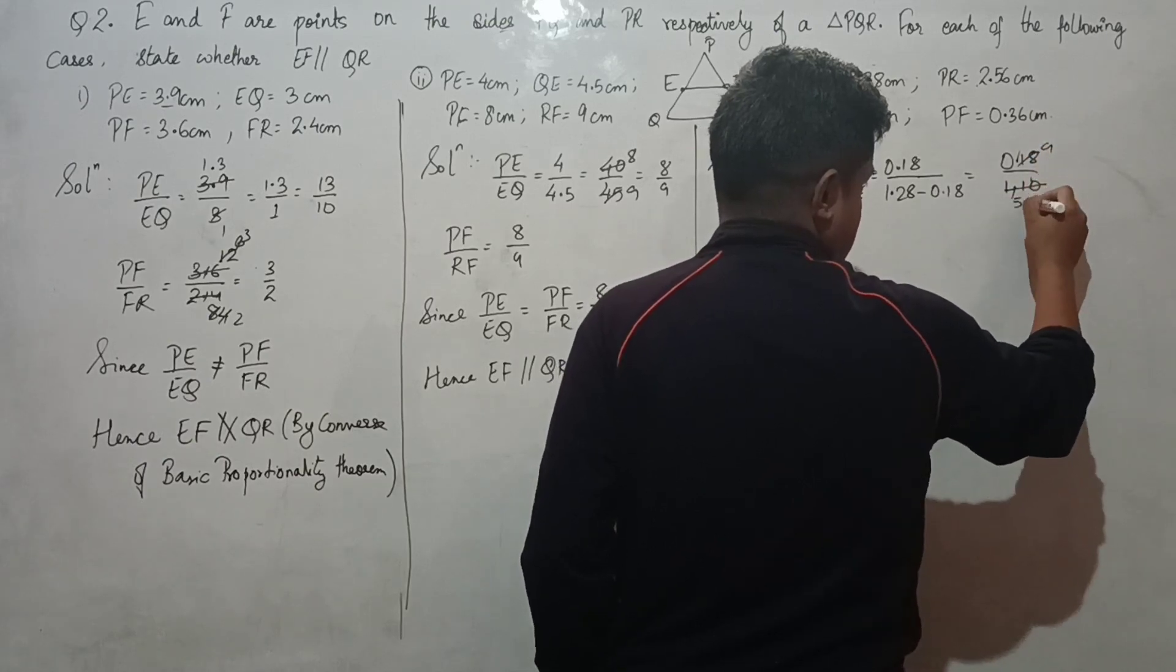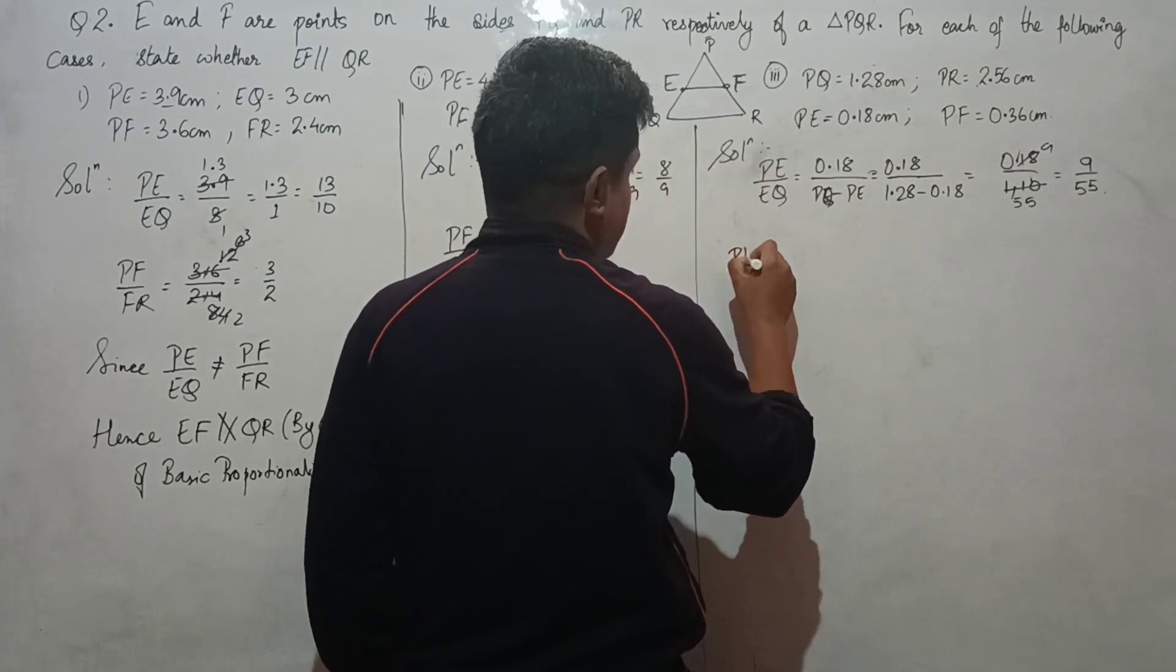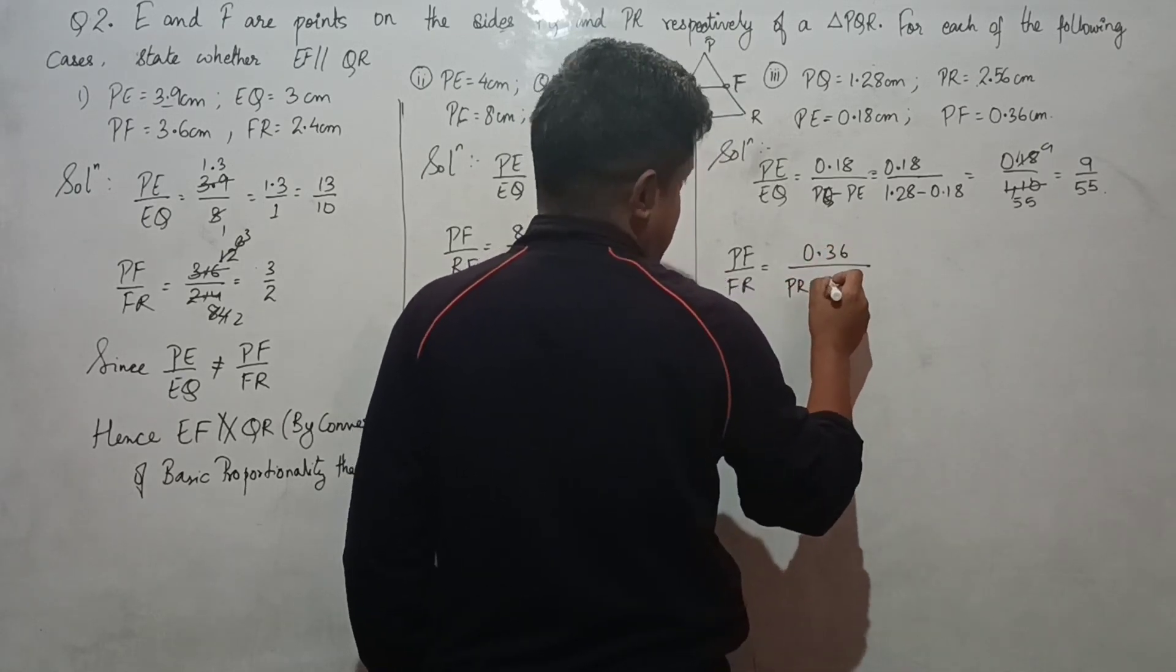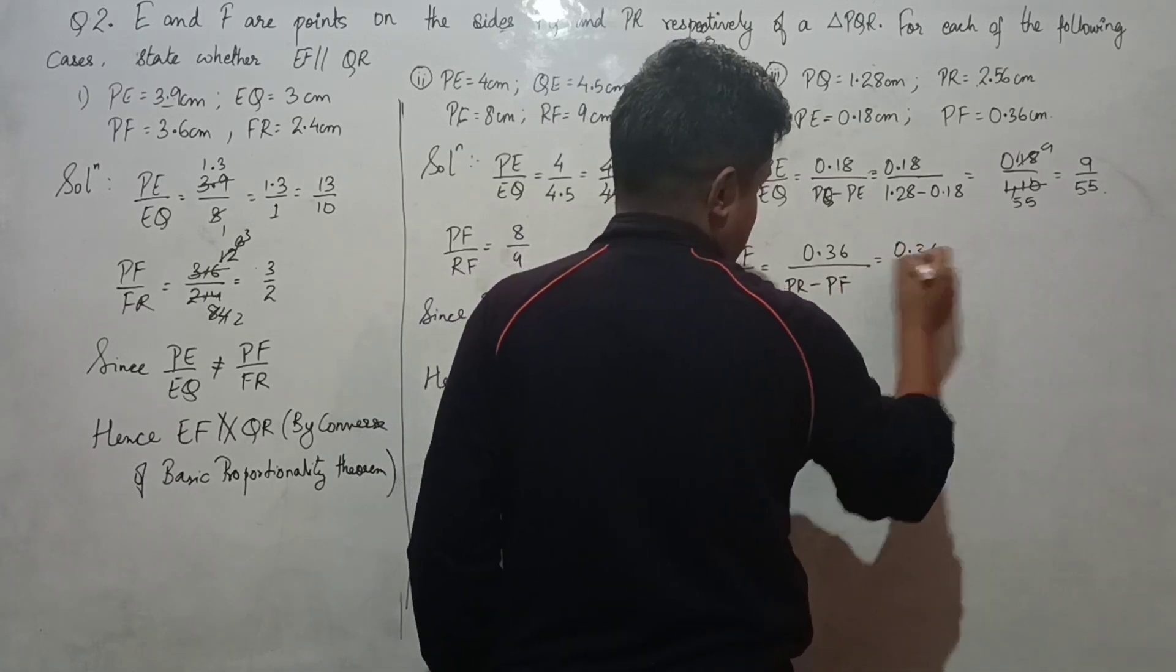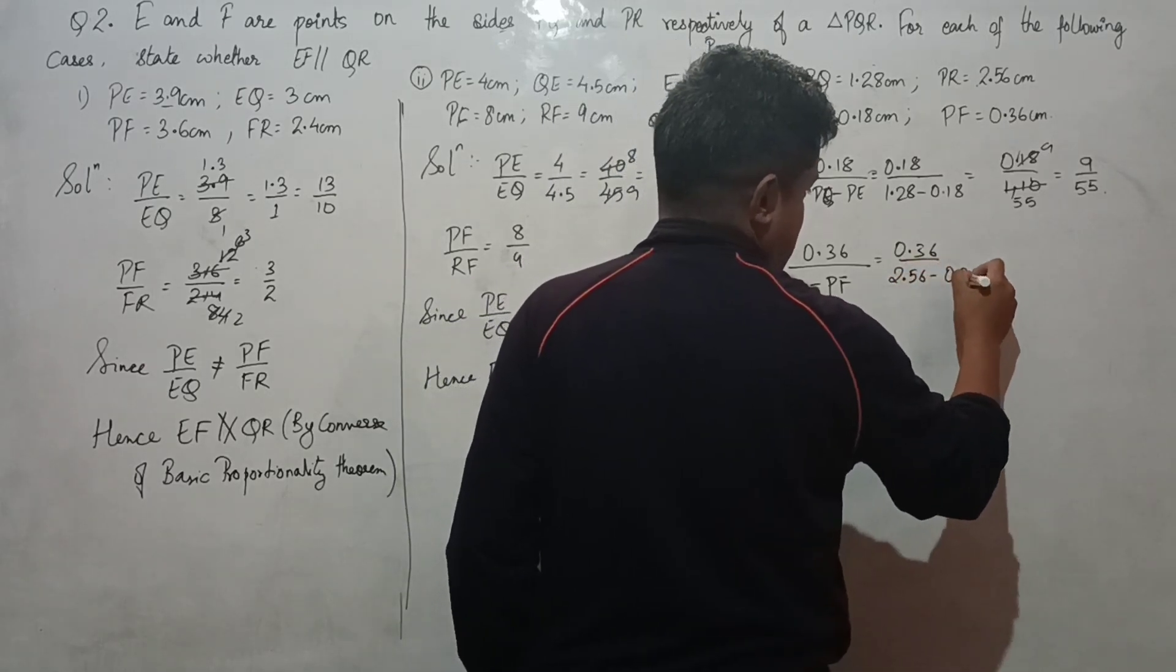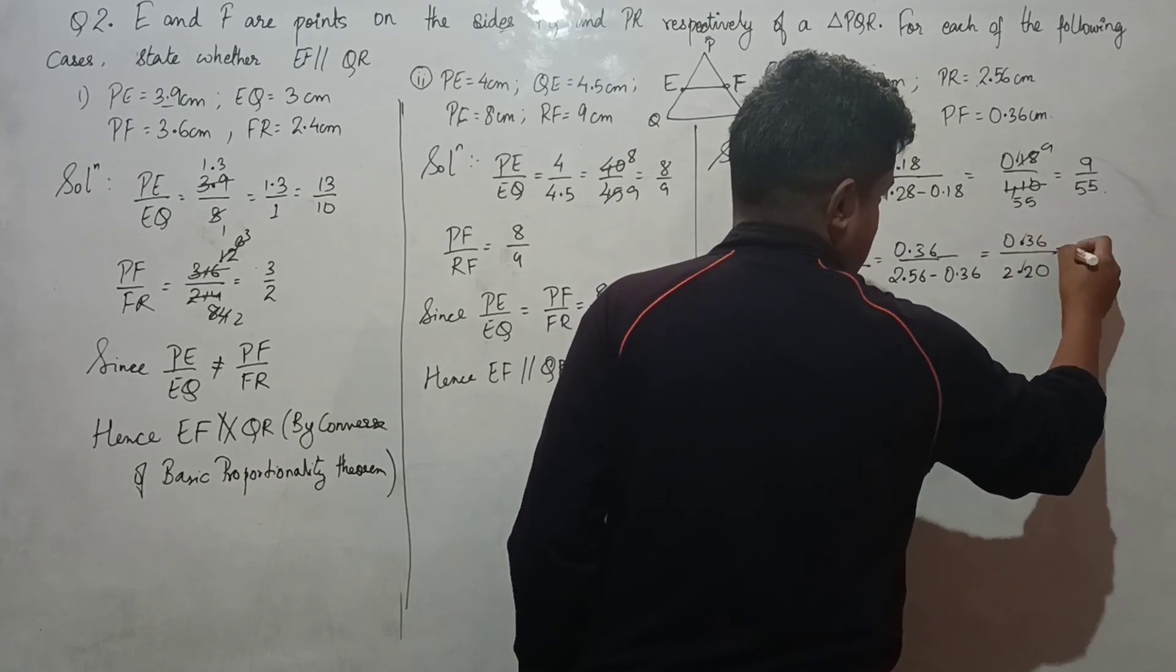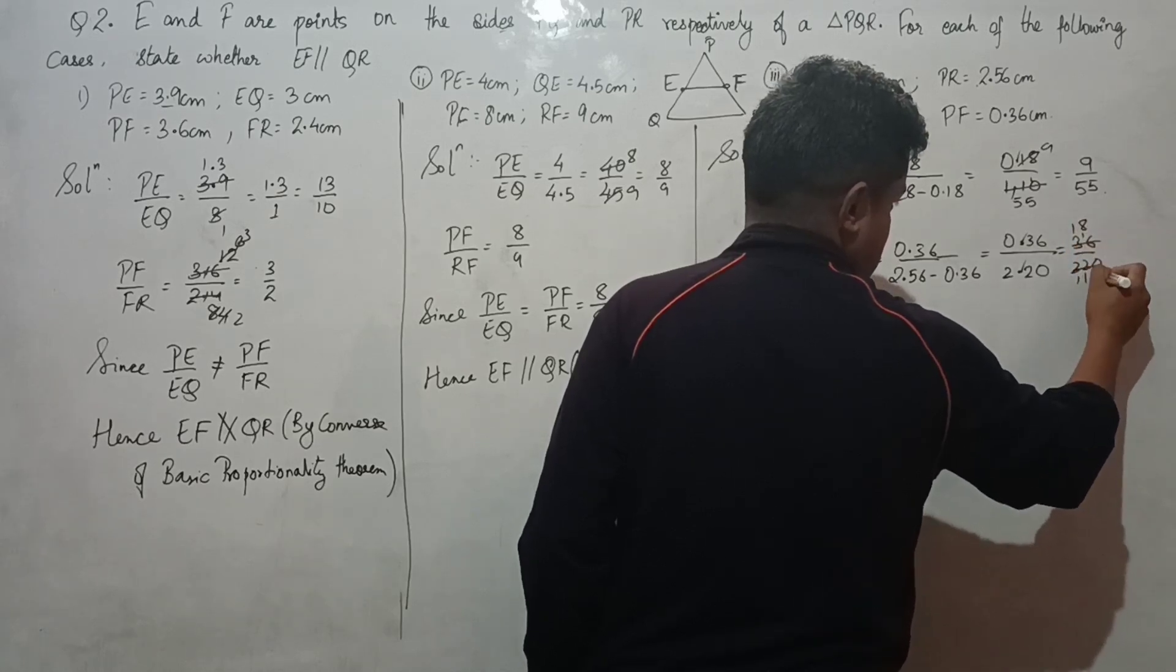Similarly, PF/FR: PF is given as 0.36, therefore FR = PR - PF. So 0.36 divided by (2.56 - 0.36) = 0.36/2.20. Canceling and simplifying: 36/220 = 18/110 = 9/55.